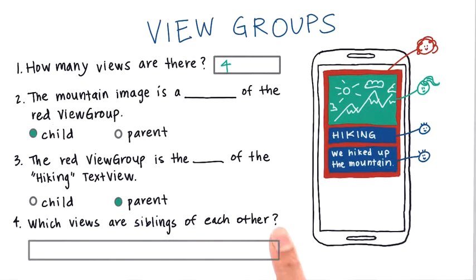Number four, which views are siblings of each other? Well, the three of these views are siblings of each other. So we have the mountain image view and the two text views.